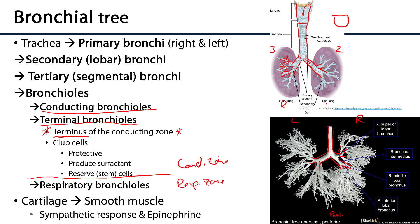As we move through the bronchioles, the amount of hyaline cartilage embedded in the walls of these pathways diminishes, and the amount of smooth muscle increases. As a result, as we move through the bronchioles, the autonomic nervous system becomes increasingly important with respect to regulating the diameter of the airway.